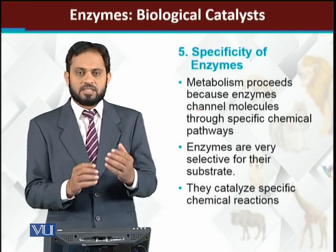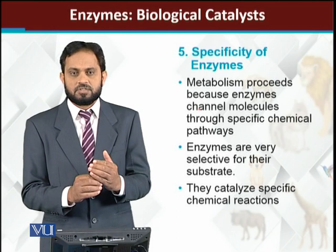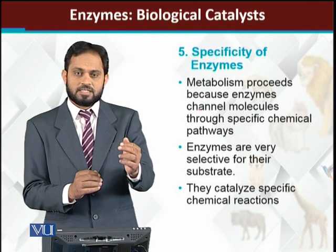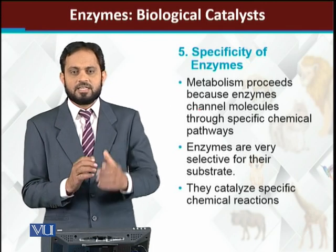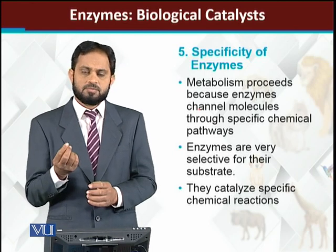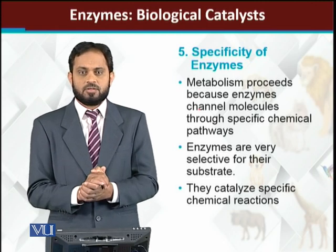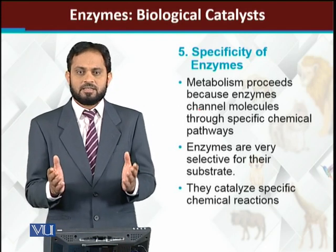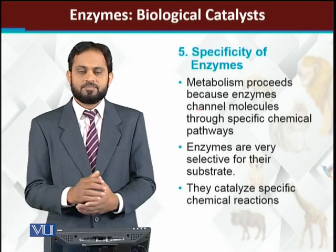For example, in glycolysis, the enzyme that phosphorylates glucose — converting glucose to glucose-6-phosphate — is hexokinase. Then for the next step, converting glucose-6-phosphate to fructose-6-phosphate, a different enzyme is required. So for every reaction and every substrate, a specific enzyme is present. A few enzymes can react with more than one substrate — these are called broad-range enzymes and they are less specific — but they are few in number. Most enzymes are very specific.